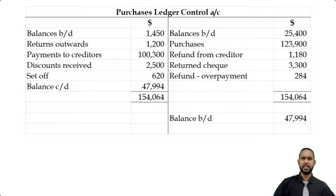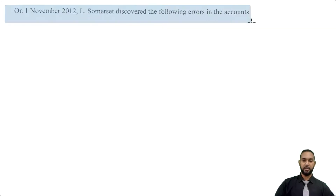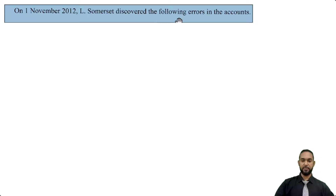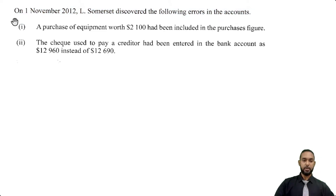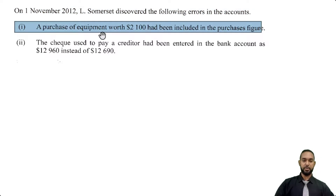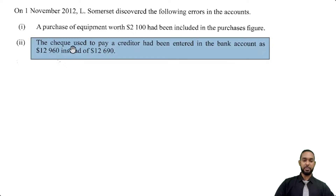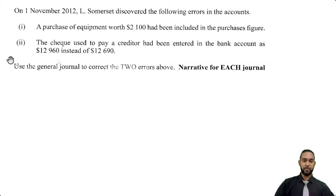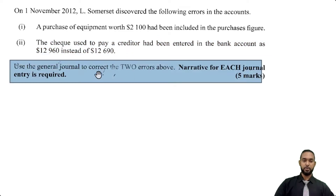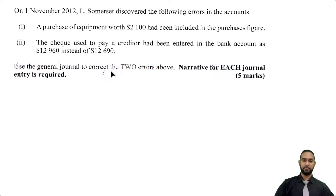There's one more part of this question. On 1st November 2012, Somerset discovered the following errors: a purchase of equipment for 2,100 had been included in the purchases figure, and the check used to pay a creditor had been entered in the bank account as 12,960 instead of 12,690 — that's an error of transposition where the digits were mixed up. We are required to use the general journal to correct the two errors above, with a narrative for each journal entry.